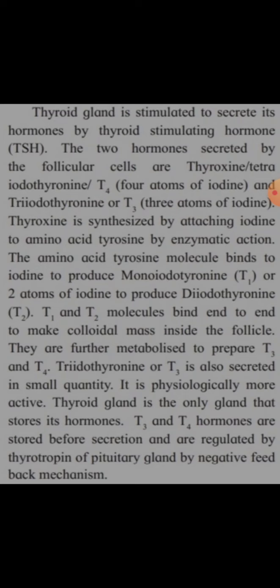Two hormones are secreted by the follicular cells: thyroxine, also called tetraiodothyronine or T4 because it has four atoms of iodine, and the second hormone is triiodothyronine or T3 because it has three atoms of iodine.